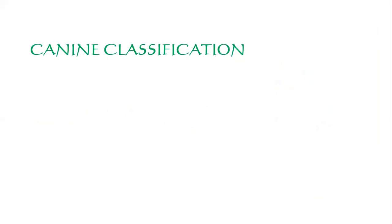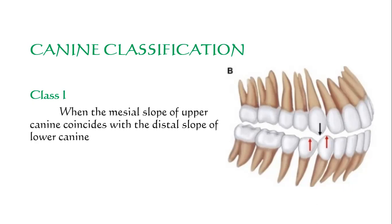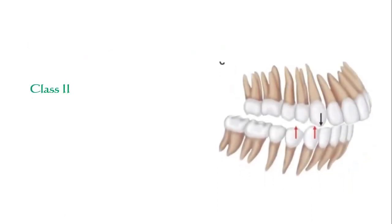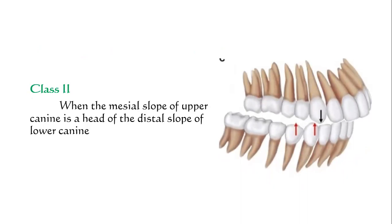Similarly to how molar relation is classified, the canine has also been classified into Class I, Class II, and Class III. Canine relation is Class I when the mesial slope of the maxillary canine coincides with the distal slope of the lower canine. Class II canine relationship is when the distal slope of the maxillary canine coincides with the mesial slope of the lower canine.